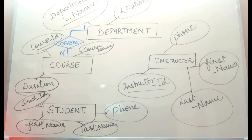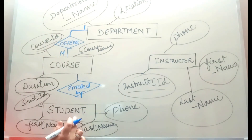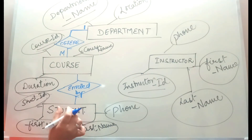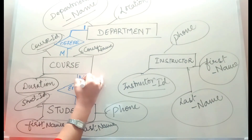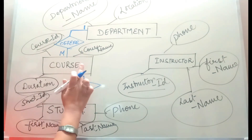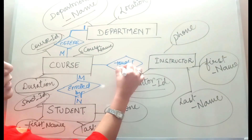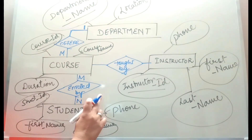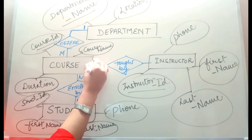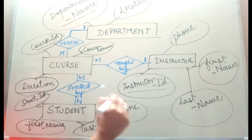What is the relationship between course and student? The course is enrolled by students. Multiple courses can be enrolled by multiple students, so the relationship is many-to-many, represented as M-to-N. Now, course is taught by instructor: multiple courses are taught by one instructor, so the relationship is many-to-one.